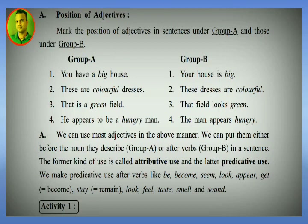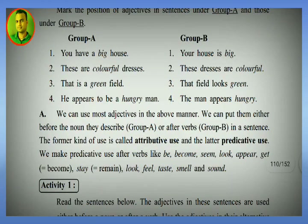Number one: 'You have a big house.' Here 'you' is the subject, 'have' is the verb, 'a' is the article, 'big' is the adjective, and 'house' is the noun — adjective before noun. Number two: 'These are colorful dresses.' Here 'dresses' is the noun, and 'colorful' is the adjective placed before the noun.